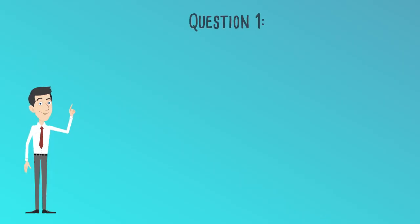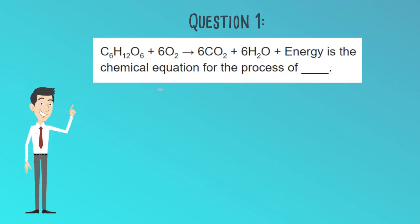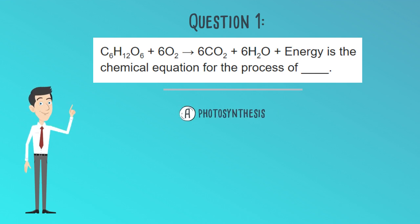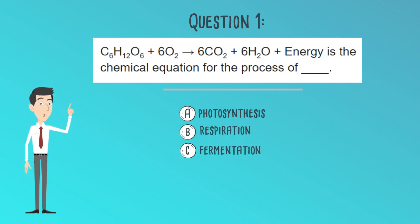Question 1. C6H12O6 plus 6O2 yields 6CO2 plus 6H2O plus energy is the chemical equation for the process of: A. Photosynthesis, B. Respiration, C. Fermentation, or D. Reduction.